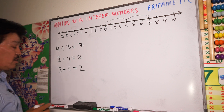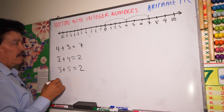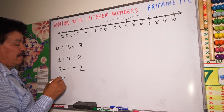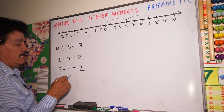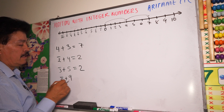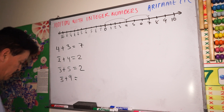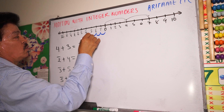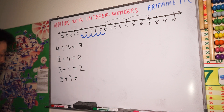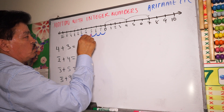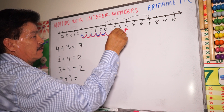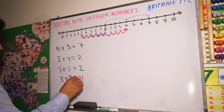Let's do another problem. Negative five plus nine. Move to negative five — one, two, three, four, five. Now move plus nine to the right — one, two, three, four, five, six, seven, eight, nine. How much is it? It's four, right?